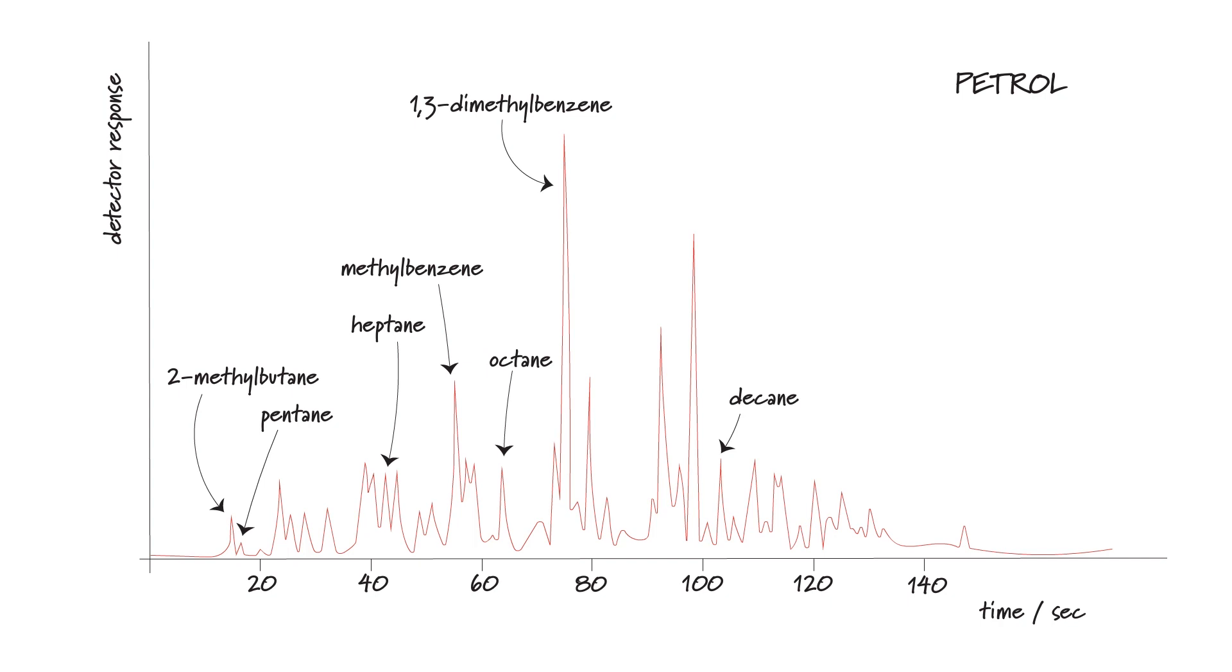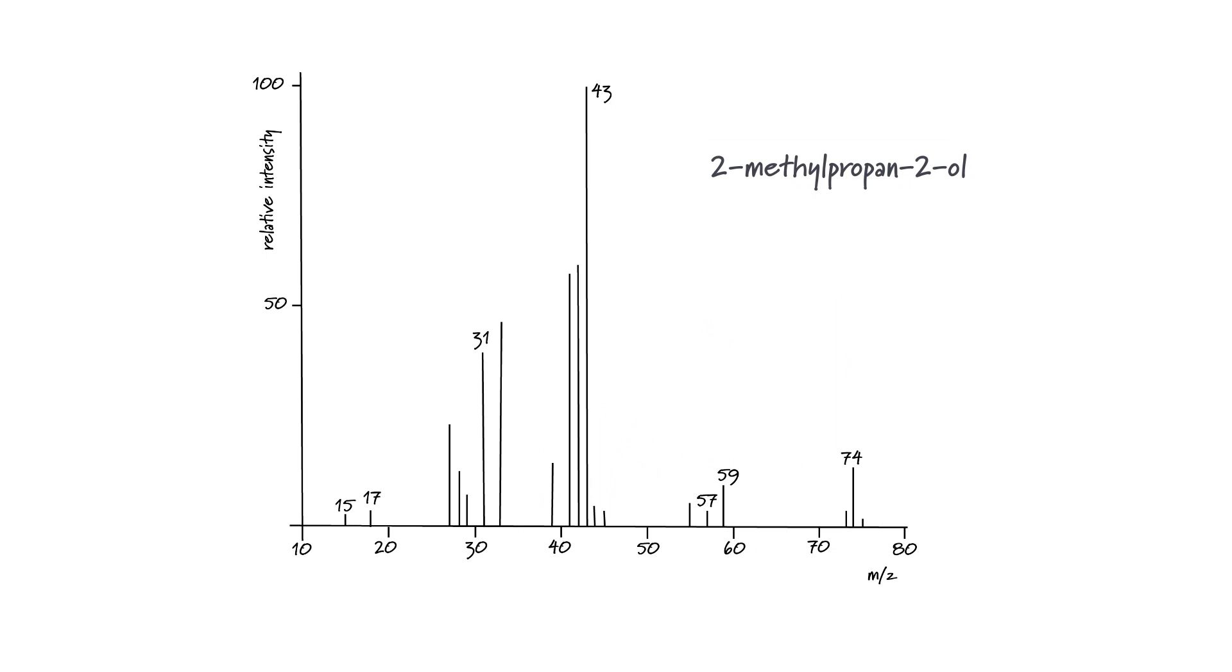There are a couple of advantages for gas liquid chromatography. Firstly it's fast. A mixture of over a hundred compounds can be analysed in just a couple of hours and if we need to identify the different compounds rather than simply separate them out then we can hook this up to a mass spectrometer and then we get a mass spectrum for each of the peaks giving us the molecular ion peak and the fragmentation pattern for that particular substance.